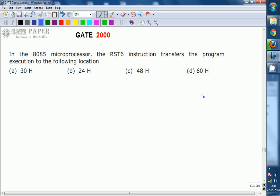RST is nothing but restart, and RST6 is a software interrupt. There are different software interrupts available. There are 8 different software interrupts, and their memory locations are going to be like this.